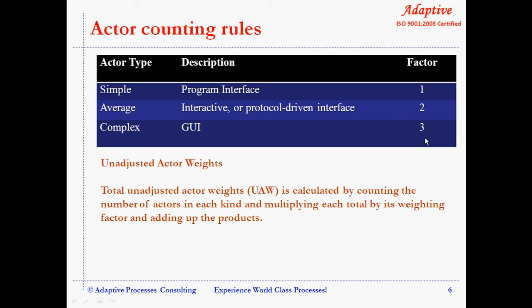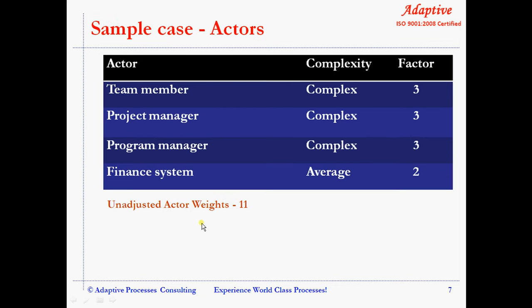Simple actors are assigned a weight of 1, average a weight of 2, and complex a weight of 3. Total unadjusted actor weights (UAW) is calculated by counting the number of actors in each category, multiplying each total by its weighting factor, and adding up the products. In our sample project control system, all actors except the finance system are considered complex and assigned a weight of 3. The finance system is considered average and assigned a weight of 2. Total unadjusted actor weights is 11.